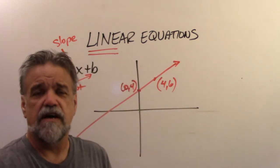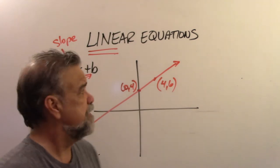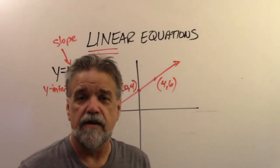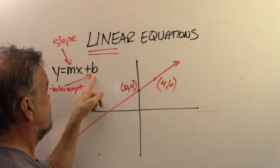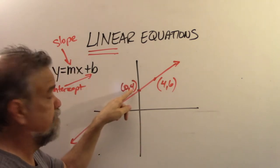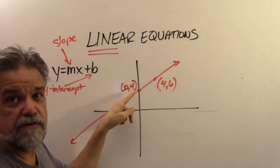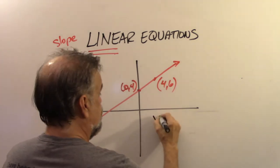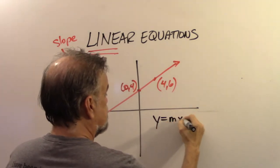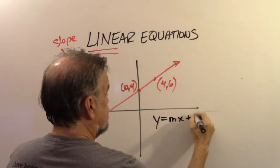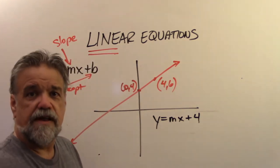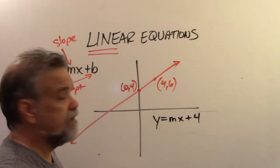This is the slope-intercept form of a linear equation. b in this case is easy — it's 4; it's where the line crosses the y-axis. So this is going to be y equals mx plus 4. How do I calculate m?